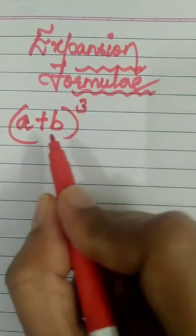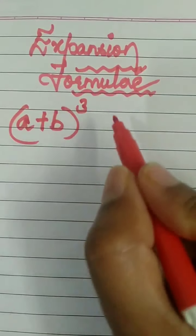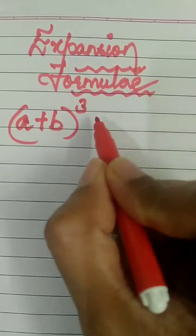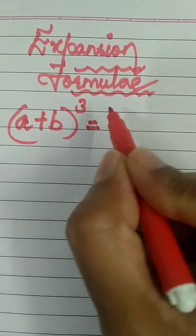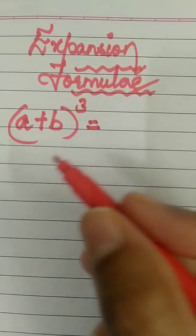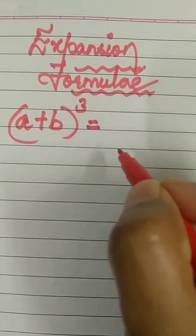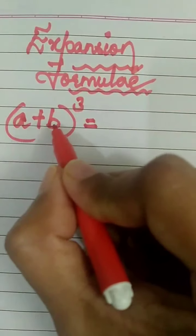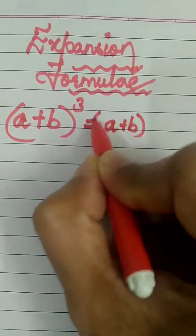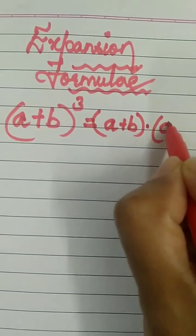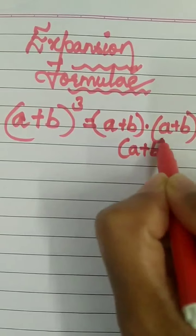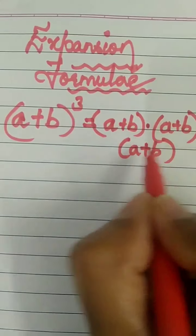A plus b, the whole cube. The expansion comes from this way, but you need not do it this long process way. I will explain how this expansion came. A plus b the whole cube means a plus b multiplied 3 times: (a + b) into (a + b) into (a + b).